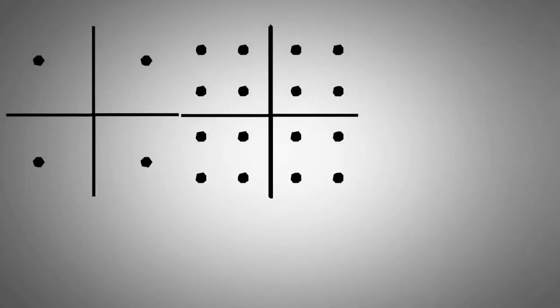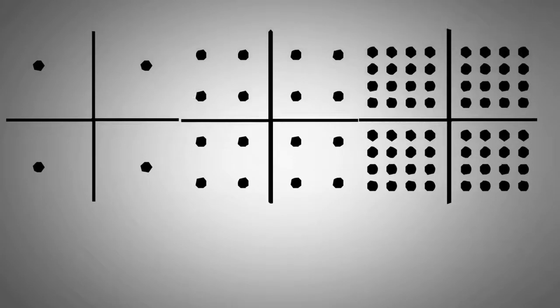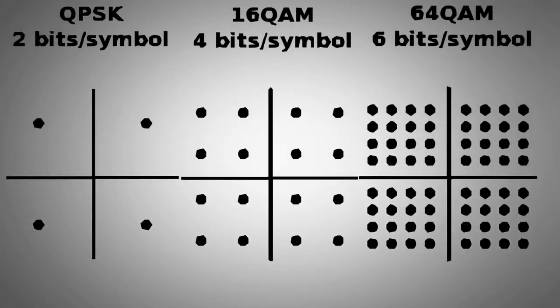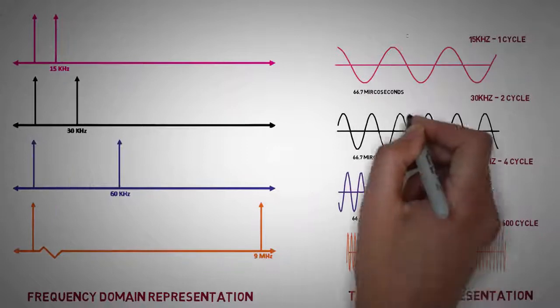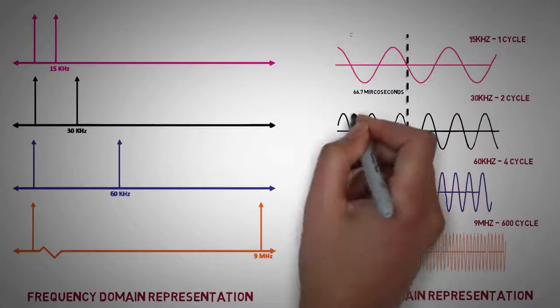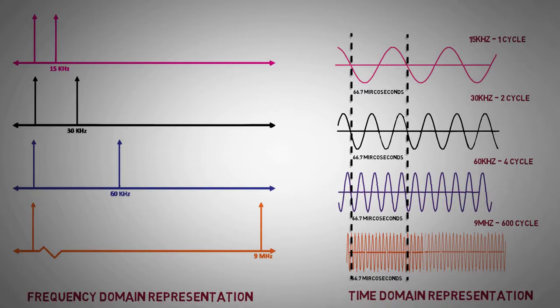These symbols represent the constellation points of digital modulation schemes like QPSK and nth order QAM. Also, the symbol duration for each of these sub-carriers is always equal to 66.7 microseconds, which means that all these sub-carriers have a whole number of cycles in one symbol duration.